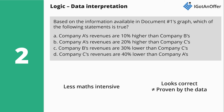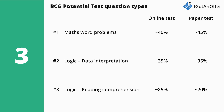The last type of question in the BCG Potential Test is reading comprehension questions. For these questions, you will be provided with a passage containing 400 to 600 words about a business topic. You'll then be asked to answer a series of questions about the information contained in the passage.